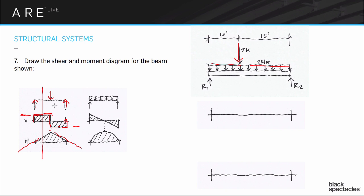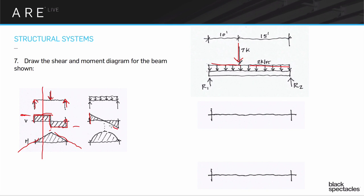When you have a point load, it leads to a boxy-looking shear diagram, which leads to a peaked-roof moment diagram. If you have a uniform load, you have the reaction going up and then a consistent load coming down — a little bit, a little bit, a little bit — so you end up with a diagonal line going down and then back up to zero. You get triangular shapes on the shear diagram when you have a uniform load.